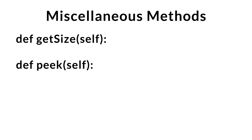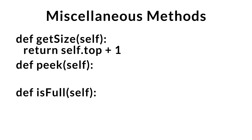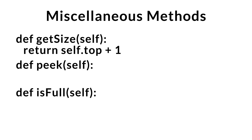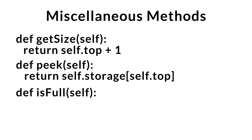Let's talk about some miscellaneous methods: get_size, peak, and is_full. The get_size method returns the number of elements within our stack. We use our top index to calculate the size, returning top plus one. When the stack is empty, top is minus one, so minus one plus one gives a size of zero. Peak is like the pop method, but instead of removing the top element, it just returns whatever is on top. The is_full method returns a boolean checking whether the number of elements equals the length of our array.